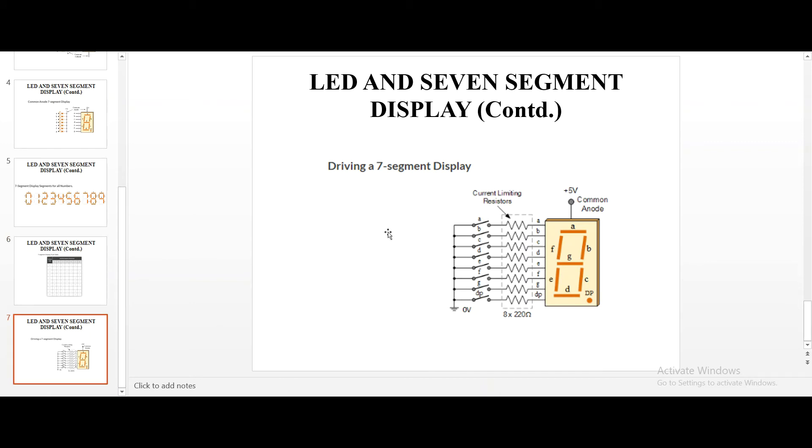So, how to drive a 7 segment LED display? See here, common anode. All the positive of the LEDs, light emitting diodes, are connected to the 5V. And a resistor is given. And it is connected to a switch. All the switches are open. So, always understand that if a switch is open, it does not conduct the flow of current. If the switch is closed, it will conduct the flow of current.